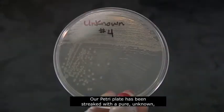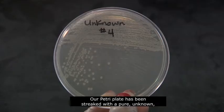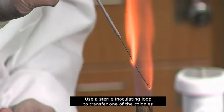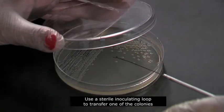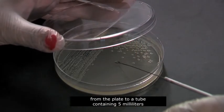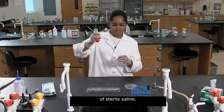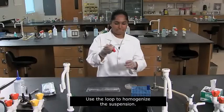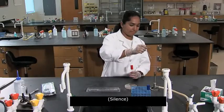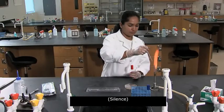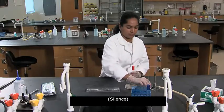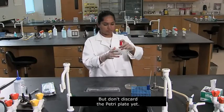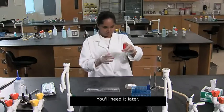Our Petri plate has been streaked with a pure, unknown, gram-negative bacillus. Use a sterile inoculating loop to transfer one of the colonies from the plate to a tube containing 5 milliliters of sterile saline. Use the loop to homogenize the suspension. This will be our working solution for the entire test. But don't discard the Petri plate yet. You'll need it later.